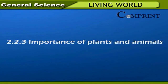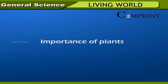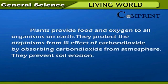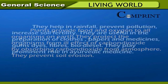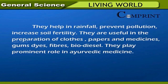Importance of plants and animals — Importance of plants: Plants provide food and oxygen to all organisms on earth. They protect organisms from the ill effects of carbon dioxide by absorbing it from the atmosphere. They prevent soil erosion, help in rainfall, prevent pollution, and increase soil fertility. They are useful in the preparation of clothes, paper, and medicines, and they give gums, dyes, fibers, and biodiesel. Plants play a prominent role in Ayurvedic medicine.